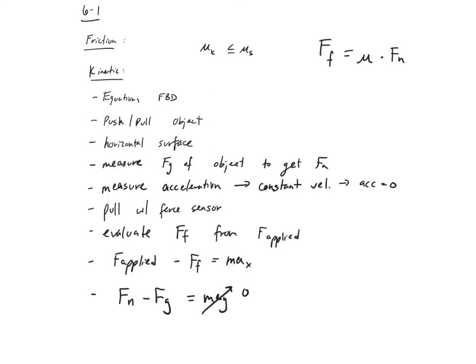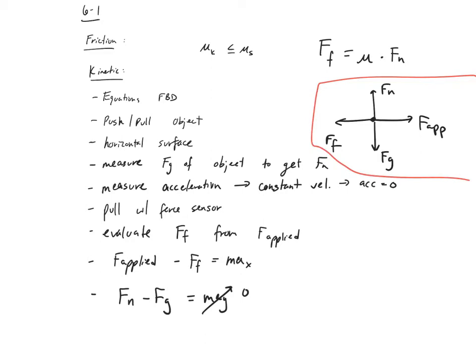So what would our free body diagram look like? Here's our object: we've got the applied force, friction pulling back, the weight pulling down, and the normal force pushing up. There's our free body diagram, which gave us the two equations we wrote down.